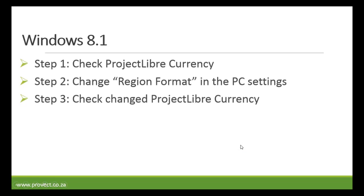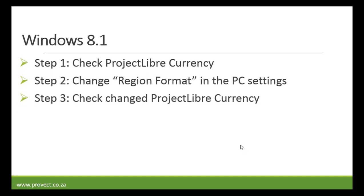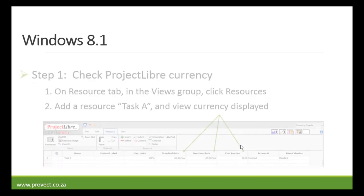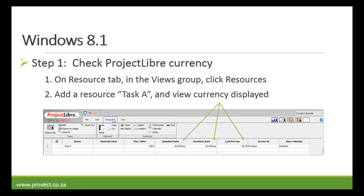Now for Windows 8.1 we're going to follow the same three steps: first check the project currency, then change your region format in the PC settings, and then check if the Project Libre currency was changed. In the resource tab, click on resources and check the currency. In this case it's pounds again.